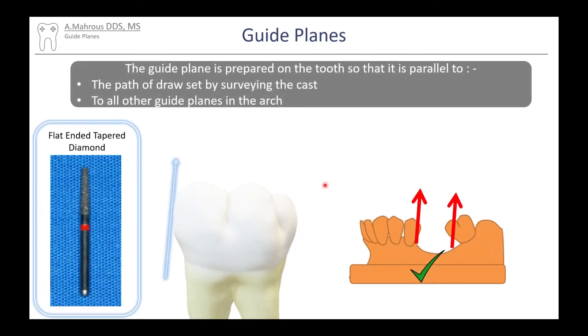Guide planes are prepared parallel to your proposed path of draw that is set on the surveyor. You do those usually with a flat-ended tapered diamond, but a flat straight diamond would also work.